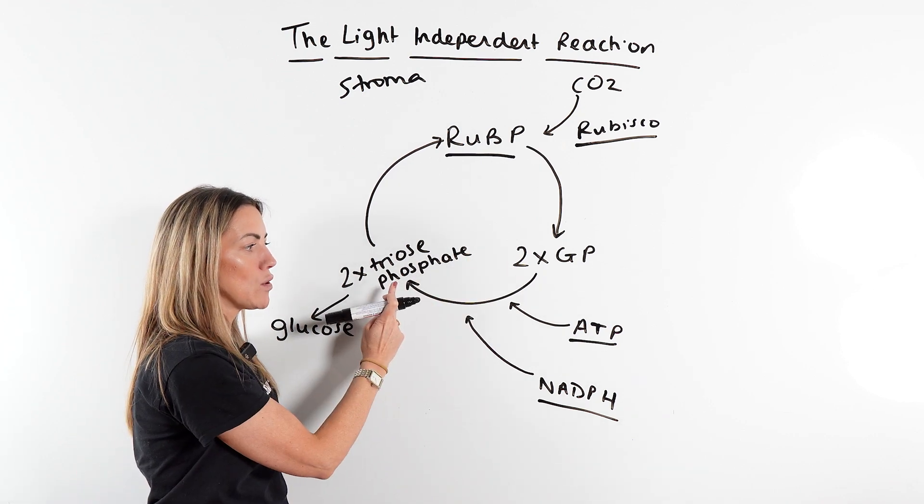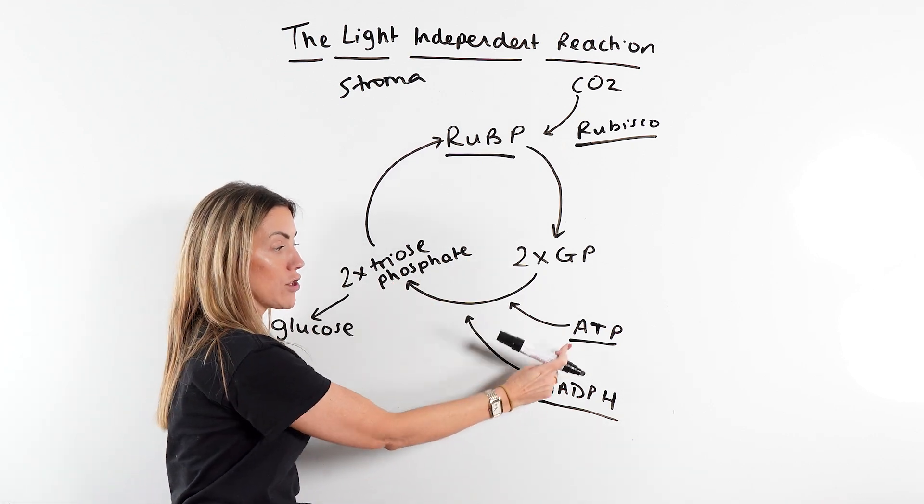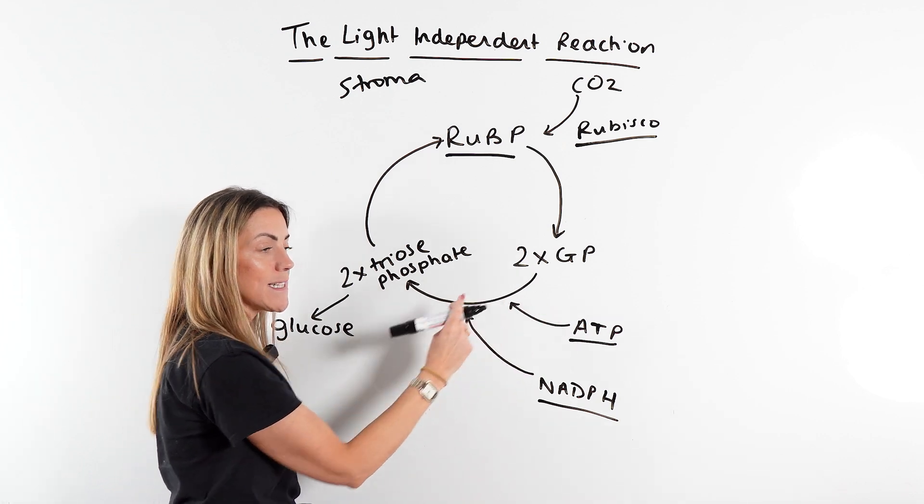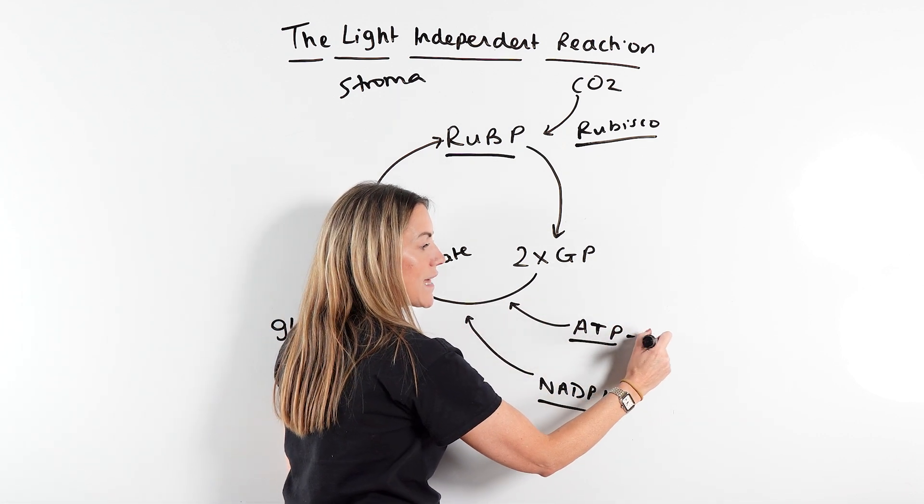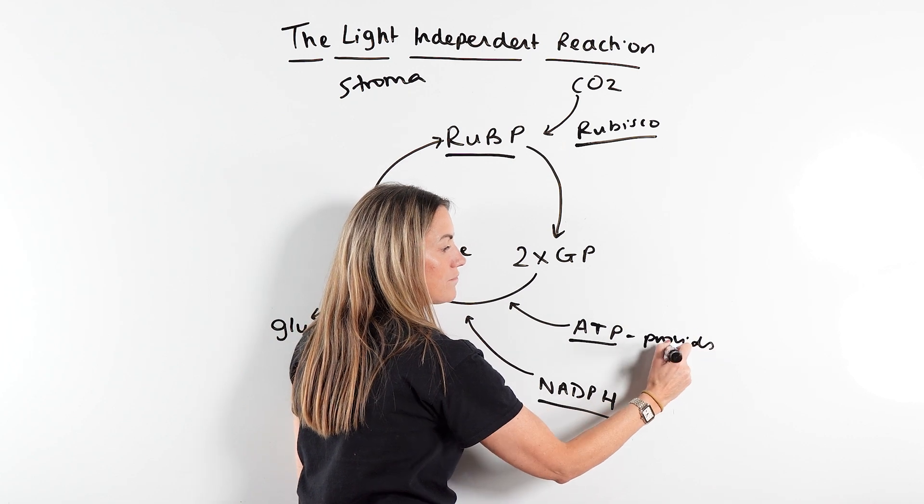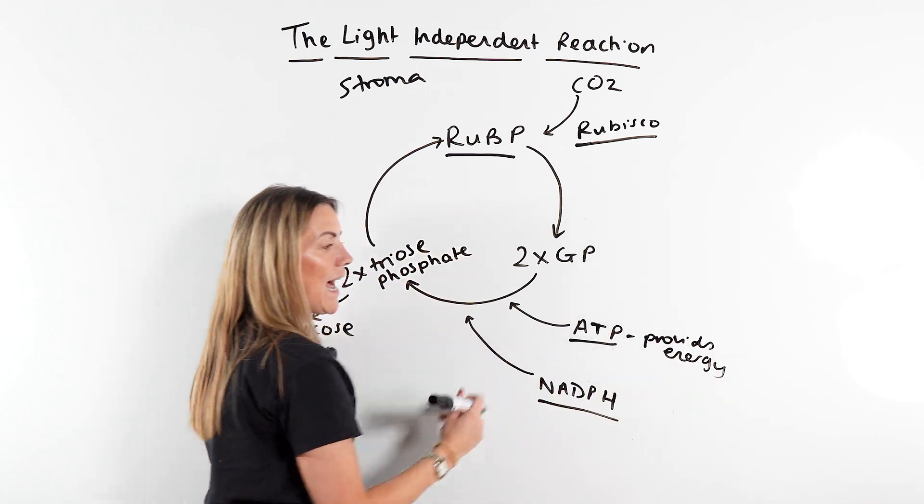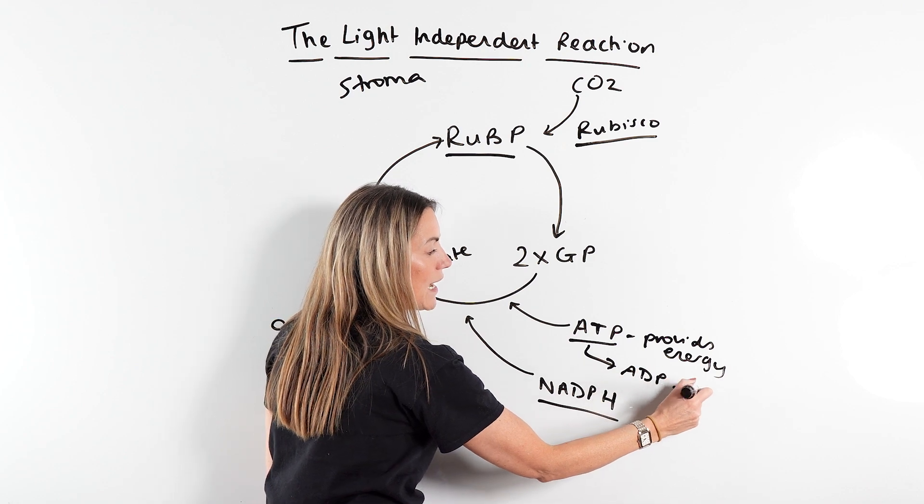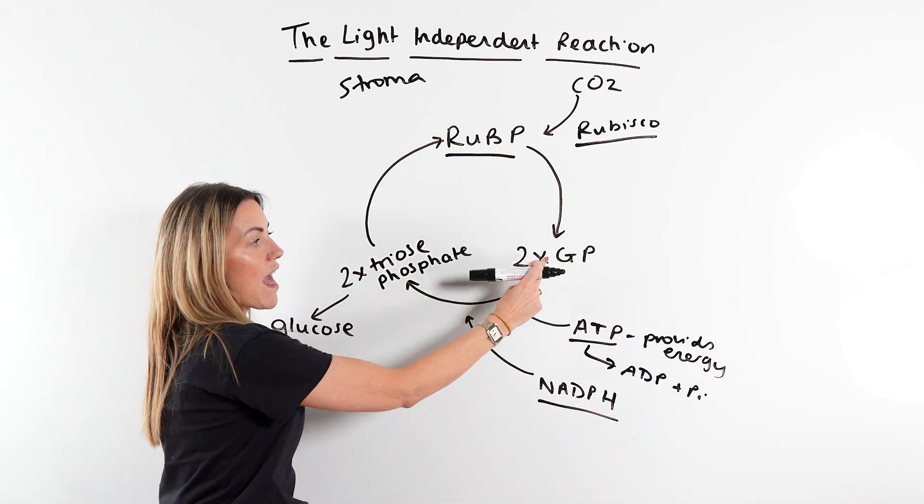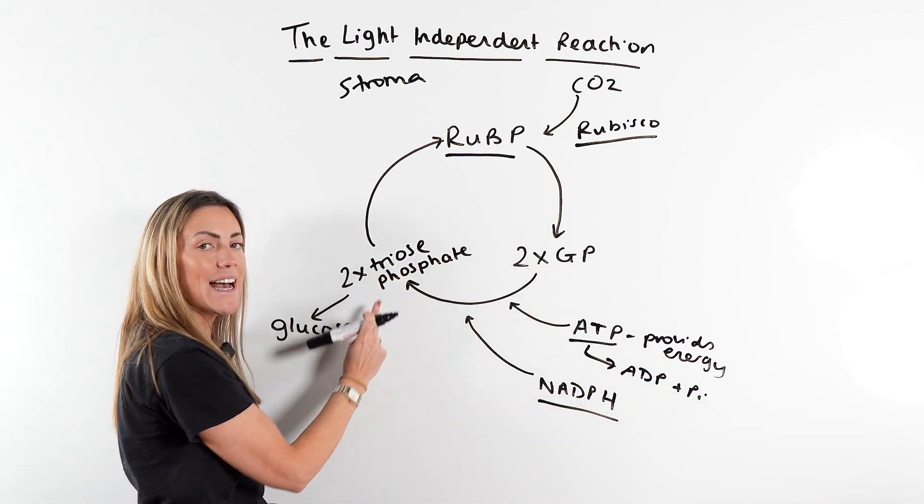Now this is the important stage because it requires the products of the light dependent reaction. So ATP that we made in the light dependent reaction, that provides the energy. So we're going to hydrolyze ATP into ADP and Pi, that releases energy and that energy is used in that conversion.